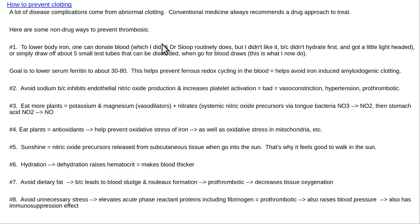Blood clots are the main reason people die. In the movies you see people bleeding, but in real life that almost never happens. In real life, you clot an artery in the heart, you get a heart attack. You clot an artery in the brain, you get a stroke. You clot off arteries throughout the body and bad things happen — you can go blind, go deaf, or develop problems like atrial fibrillation and congestive heart failure.